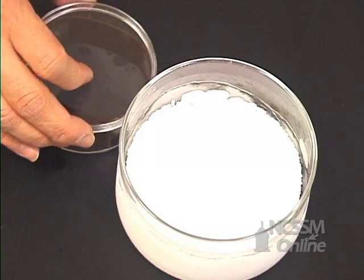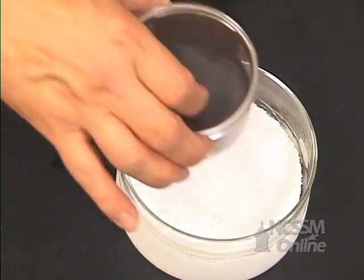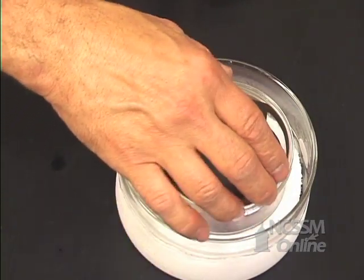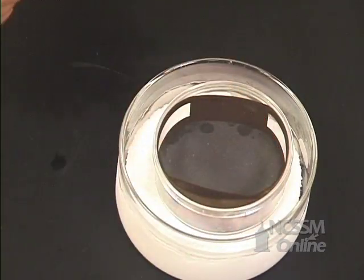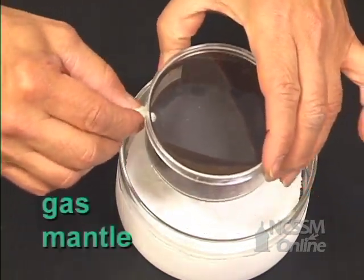We're going to sit the cloud chamber on a block of dry ice. As the dry ice cools the vapor, the container will become saturated with methanol vapor. We're going to put a small gas heating mantle into the side.